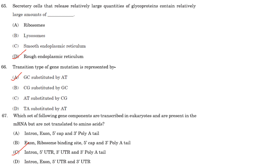Which set of gene components are transcribed in eukaryotes and present in mRNA but not translated to amino acids? They are introns, 5' UTR, 3' UTR, and 3' poly-A tail.